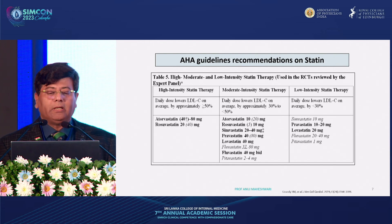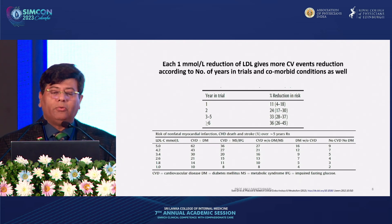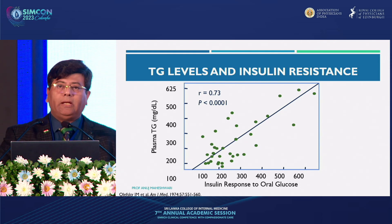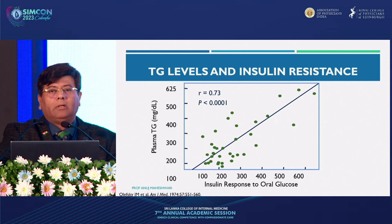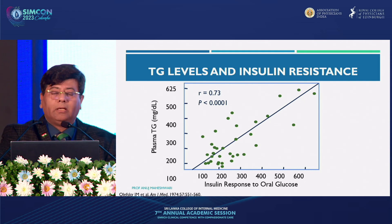Risk thresholds for statin therapy: below 5% risk — lifestyle modification only; 5–7.5% (borderline risk) — risk enhancer assessment and moderate-intensity statin discussion; 7.5–20% (intermediate risk) — initiate moderate-intensity statin to reduce LDL by 30–49%; above 20% — initiate statin to reduce LDL by at least 50%. High-intensity statin reduces LDL by approximately 50% or more; moderate intensity 30–50%; low intensity less than 30%.